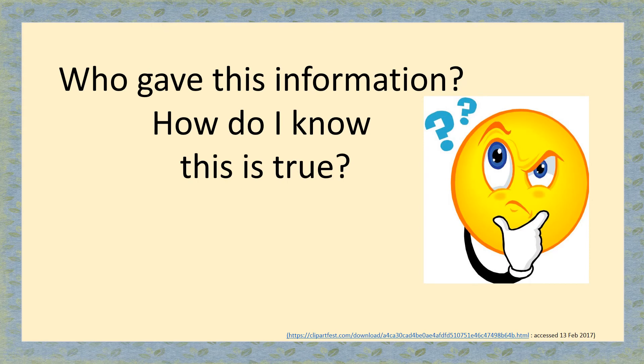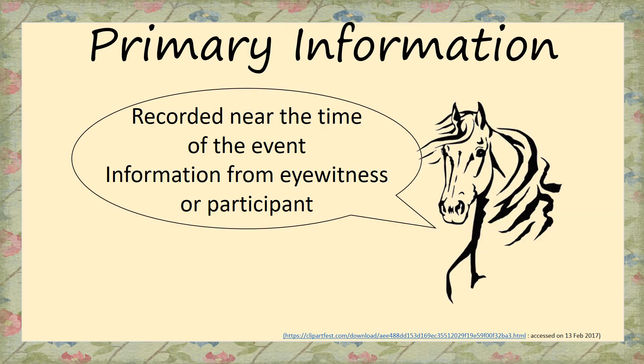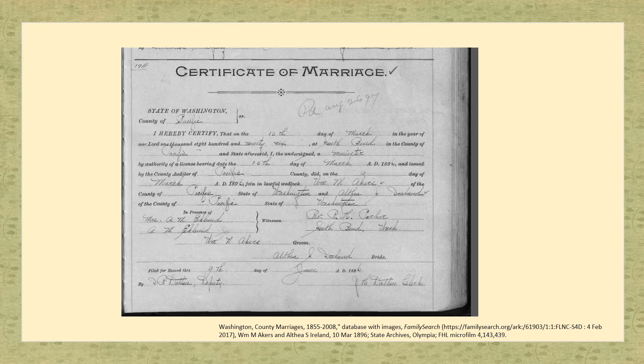When we think about information we should ask: who gave this information, and how do I know it's true? Primary information is information recorded near the time of the event and given by eyewitnesses or participants — someone close to it. It's like getting information right from the horse's mouth. William Eckers and Althea Ireland would have given information to the court official to create this marriage record. They would have known how old they were and where they were living at the time, so this is a case of primary information.